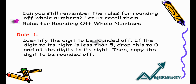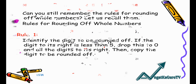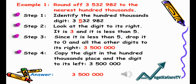Can you still remember the rules for rounding off whole numbers? Let us recall them. The rules for rounding off whole numbers — Rule Number One: Identify the digit to be rounded off. If the digit to its right is less than five, drop it to zero in all the digits to its right, then copy the digit to be rounded off.